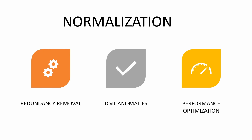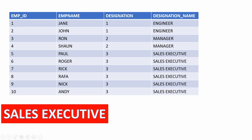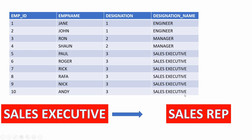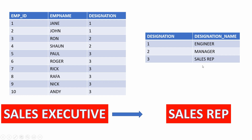A lot of you may have heard that denormalization improves query performance, so in what world would normalization improve performance? We have an employee table that maintains the employee details along with the designation the employee works on. The organization decides that instead of calling people sales executives, they will be called sales rep. With this table structure, we will have to update every row that contains the term sales executive or has designation ID 3. Now if the same data set was normalized, all we had to do was update a single row in the designation table. The important thing to note here is that denormalization improves the select query performance but is a nightmare in case of frequent updates.